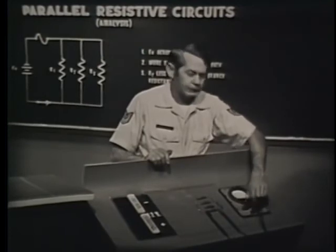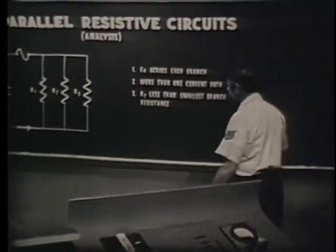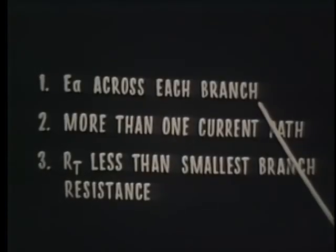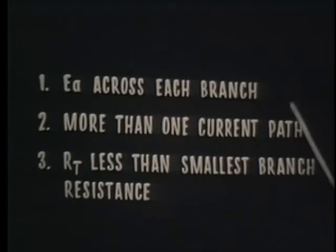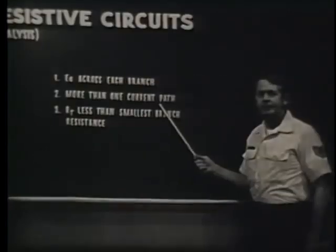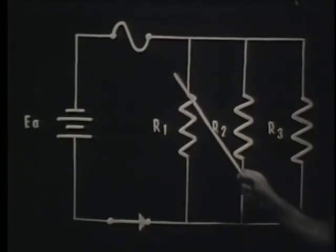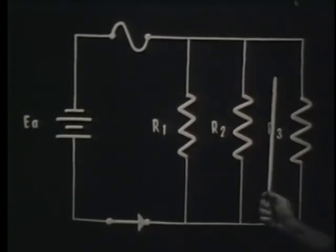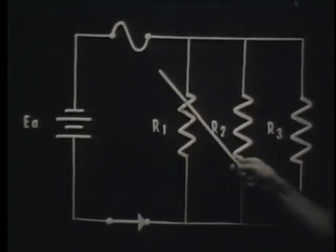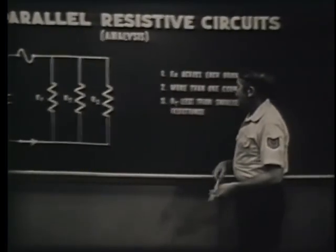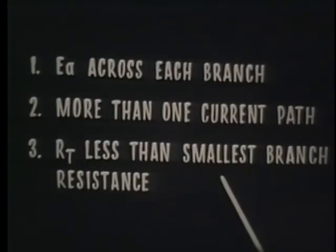And that's current, voltage, and resistance in a parallel circuit. Let's go over some important points. First, the applied voltage is felt across each branch. Also, there's more than one path for current. The total current divides among the various branches. If we add more resistors, we decrease total resistance and increase total current flow. Total resistance is always less than the smallest branch resistance.